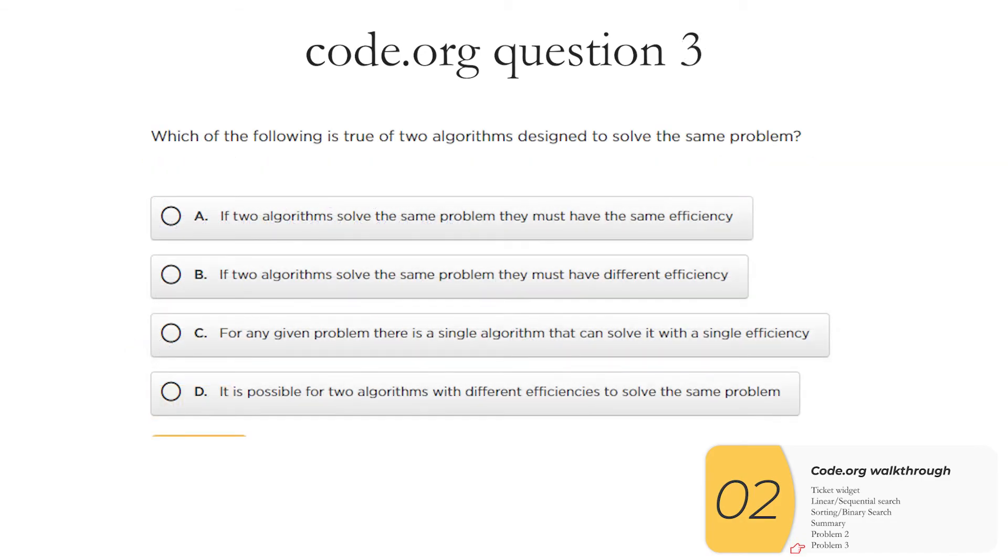And finally we have this question asking which is true of two different algorithms. We just worked on linear search versus binary search and so we know that it's possible for these two different algorithms even though they're solving the same problem to have different efficiencies. So the answer here is D.